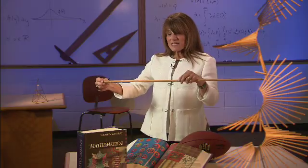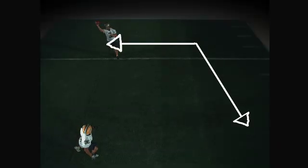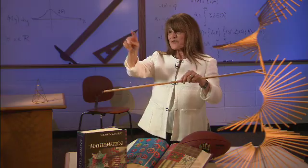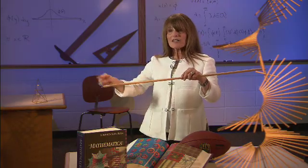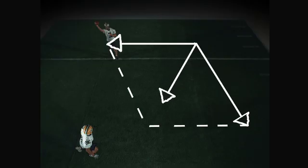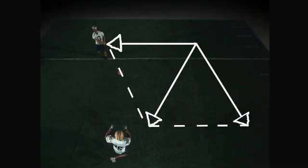We take our two vectors and form a parallelogram, which is a four-sided object with opposite sides parallel. Using the parallelogram's geometry, the vector sum is determined — the sum of the two vectors is simply the diagonal of the parallelogram. This makes it all the more important that the receiver is at the right place at just the right time to receive the pass.